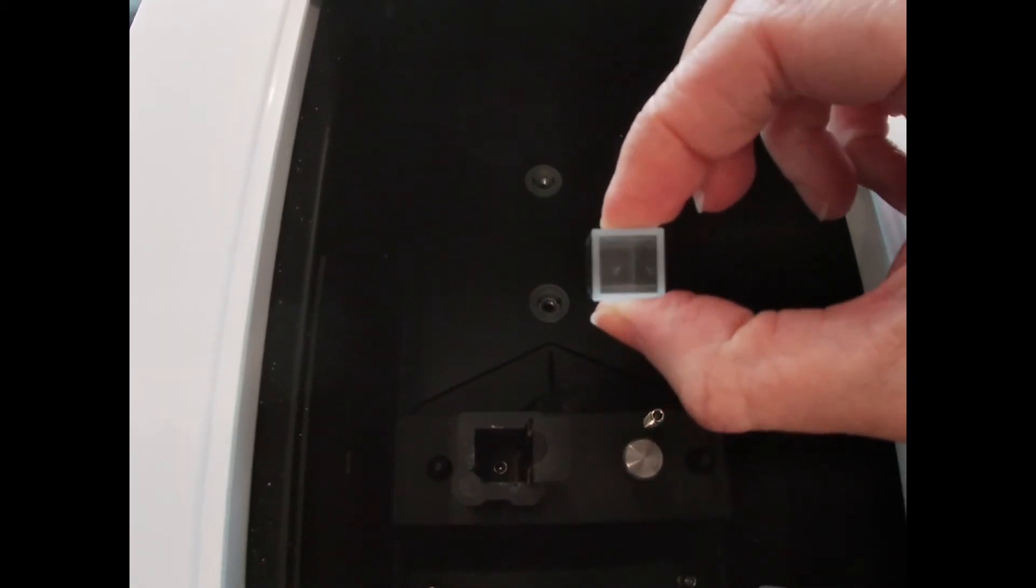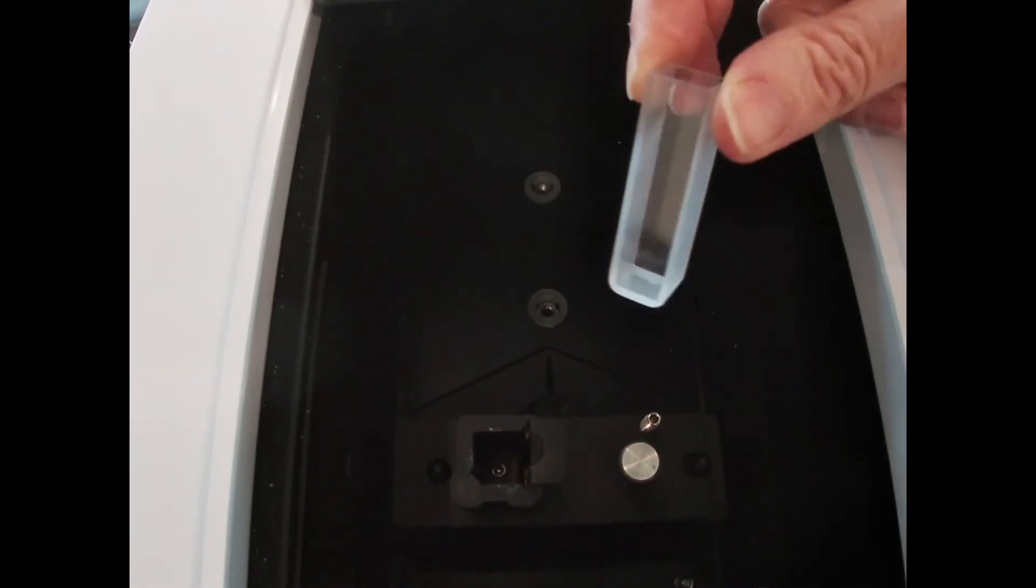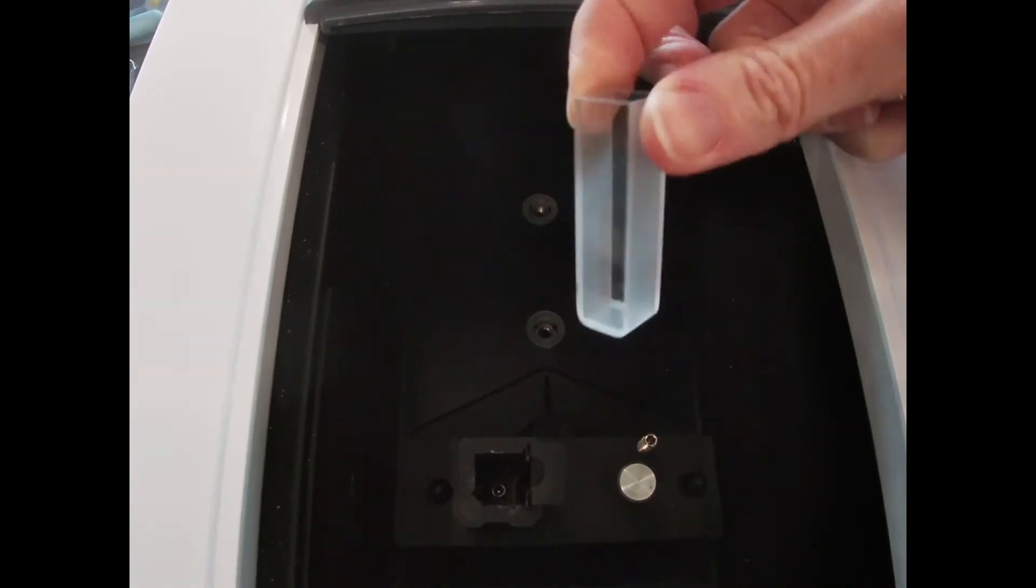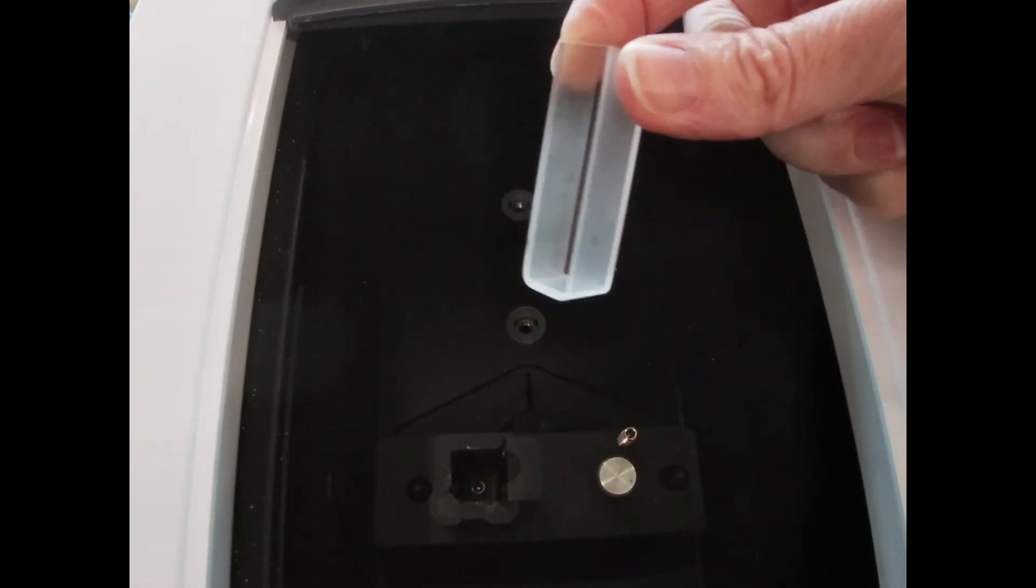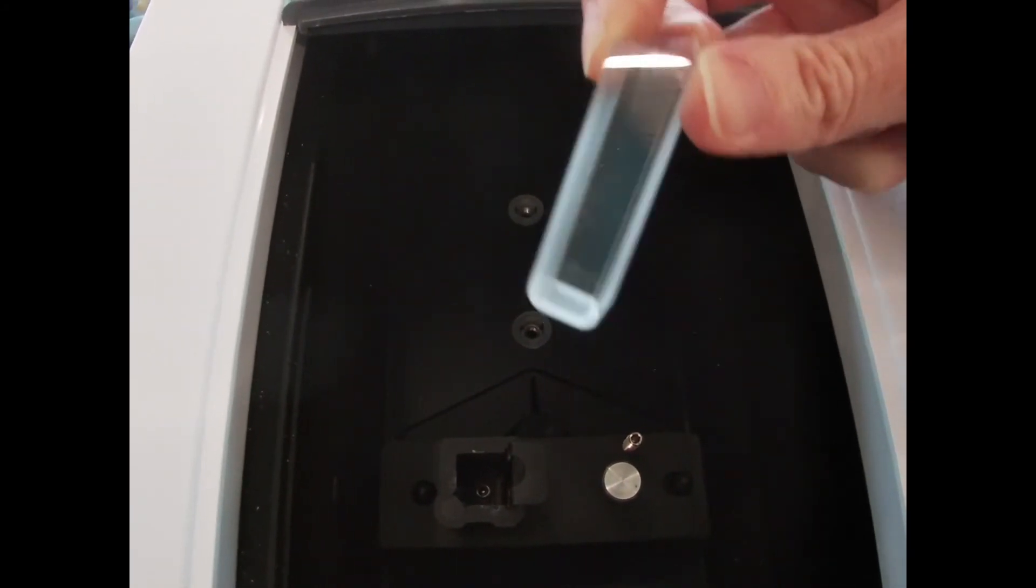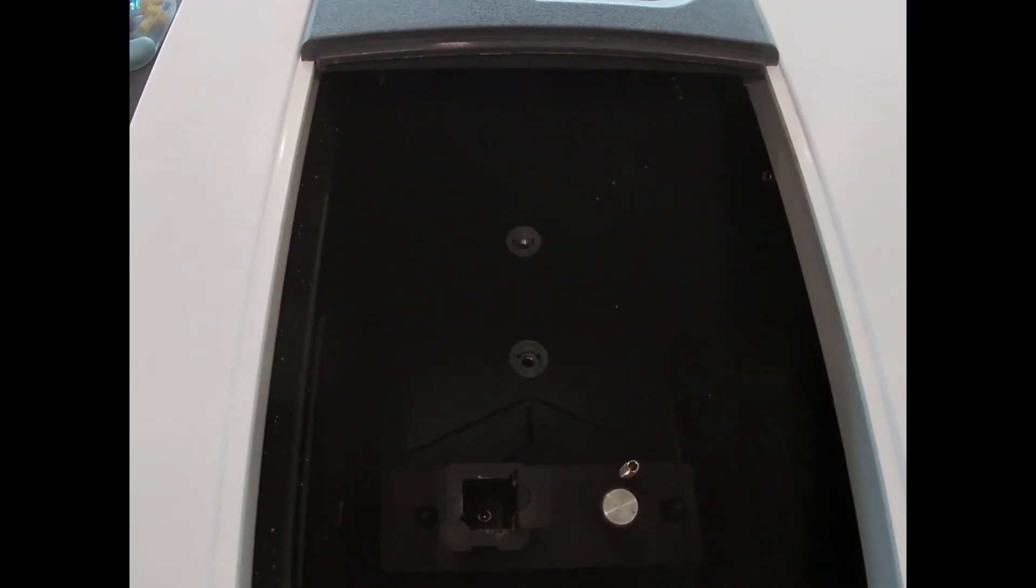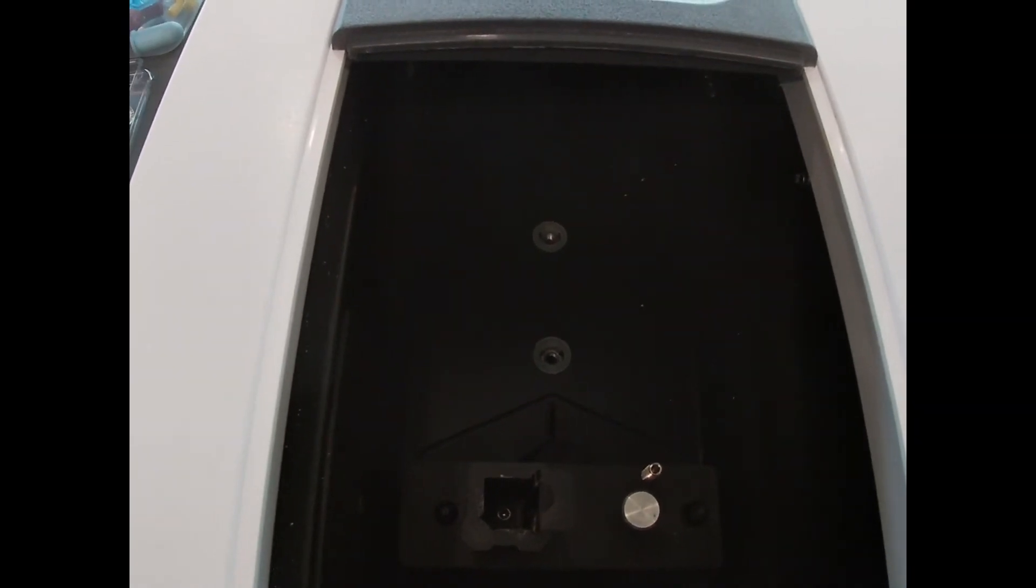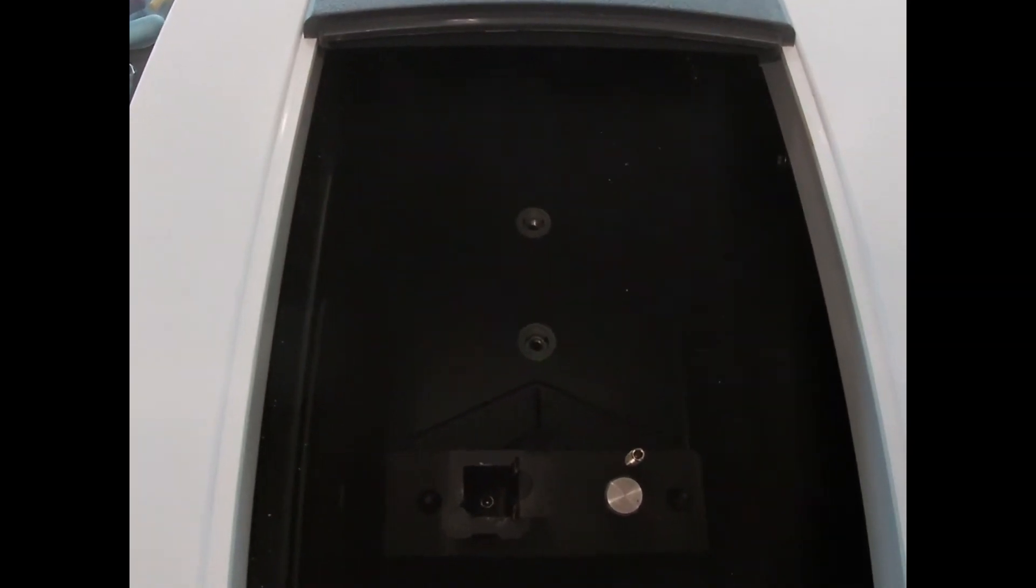The path length is set by the diameter of the cell, so we have a consistent geometric path length locked in for every analysis. The cuvettes themselves are typically made of glass or quartz because they need to be optically transparent. For UV, that requires quartz, and for visible, we can often use glass.